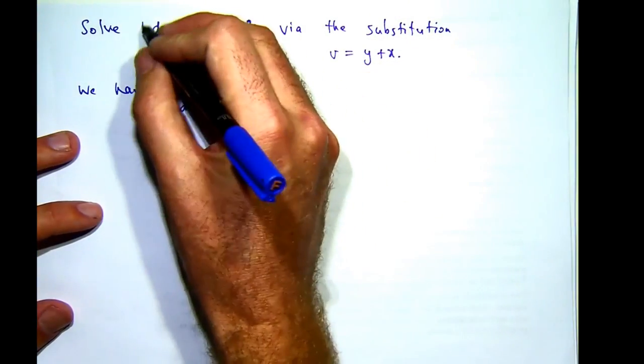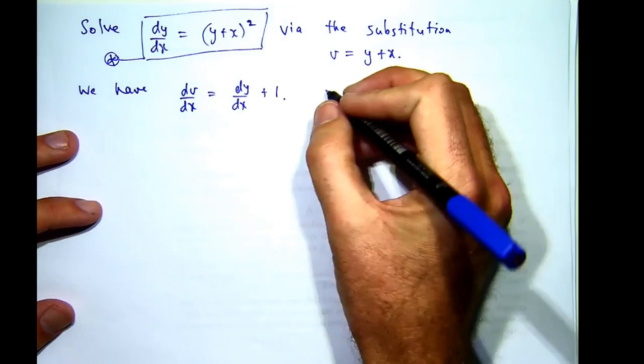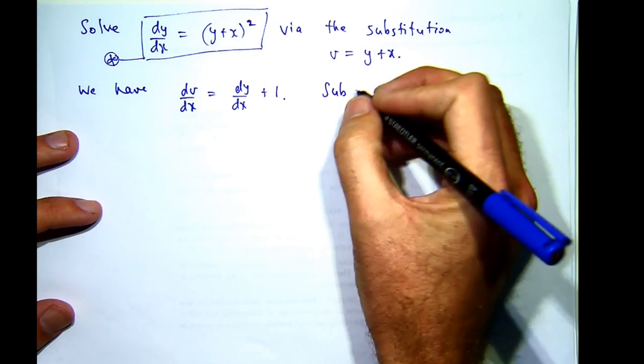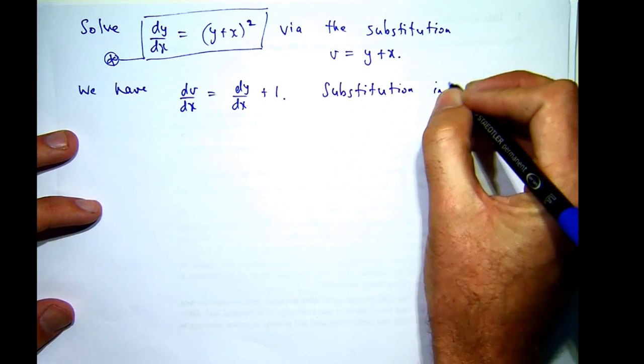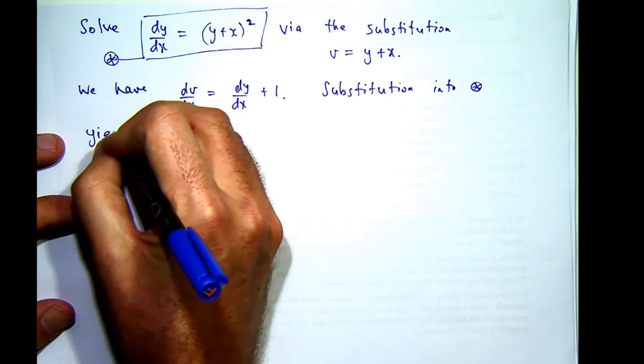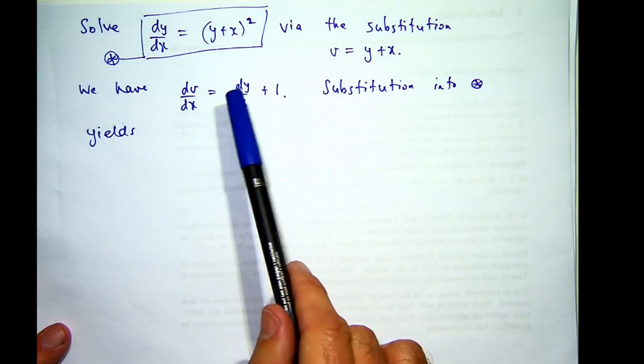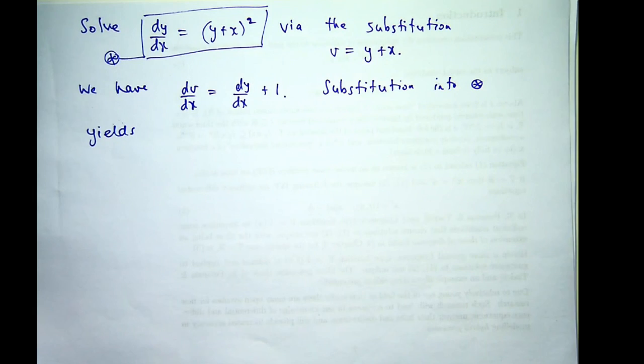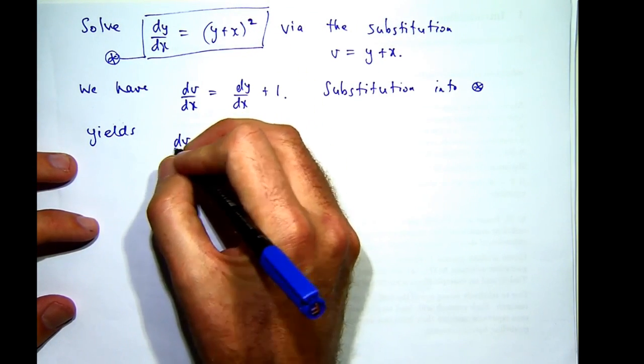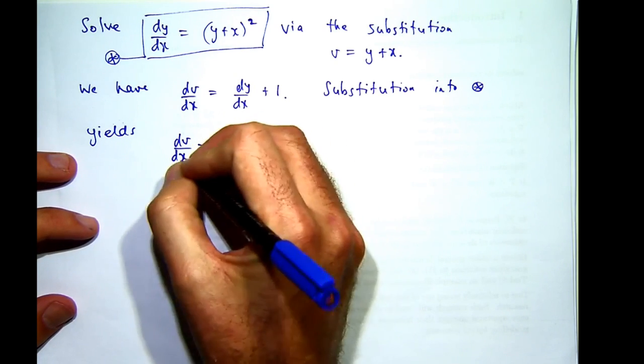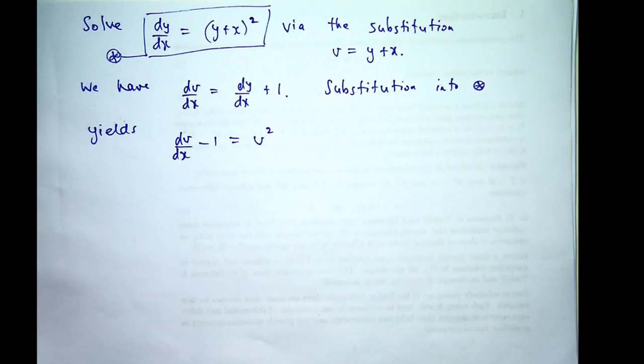So if I rearrange this, I'll get dy/dx equals dv/dx minus 1. So that'll be the left-hand side. And if I replace y+x with v, I get the following.